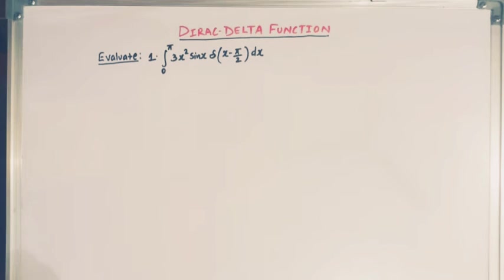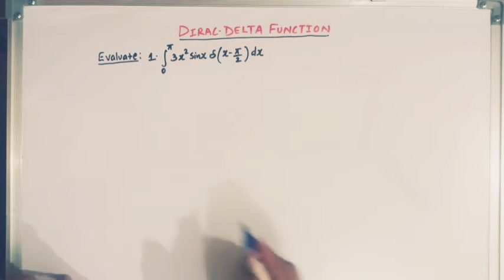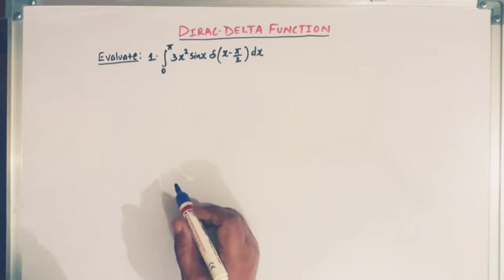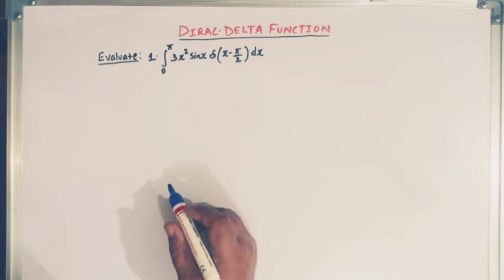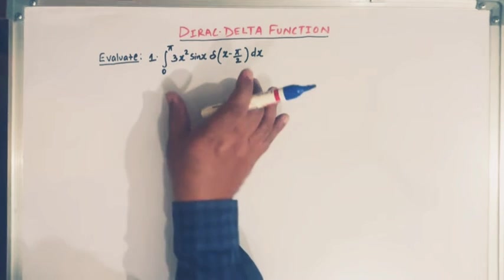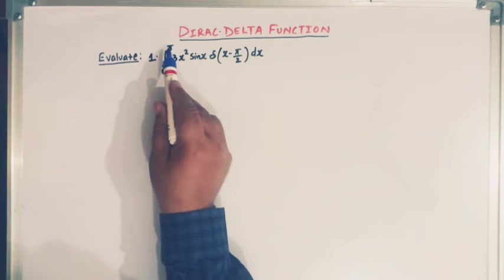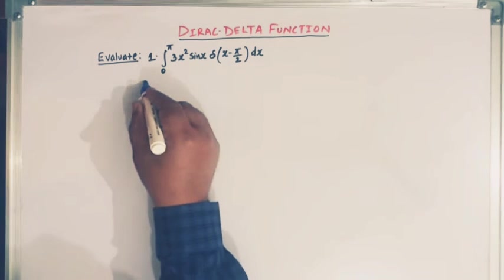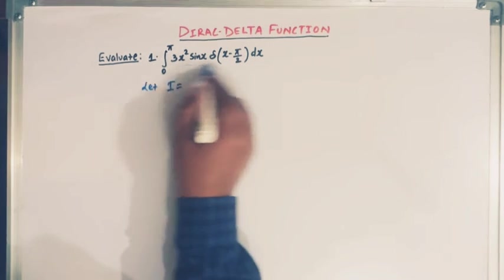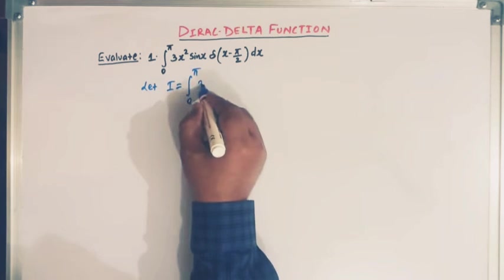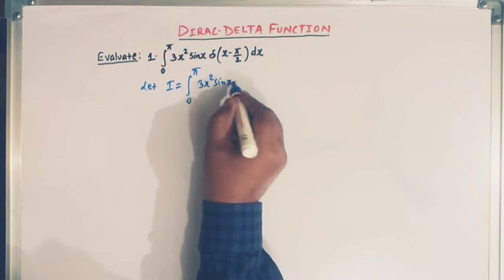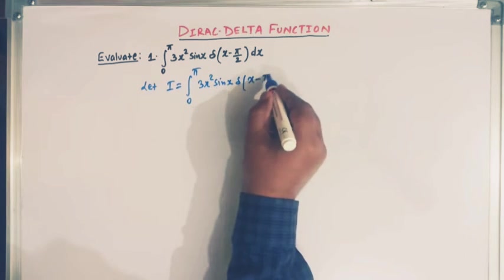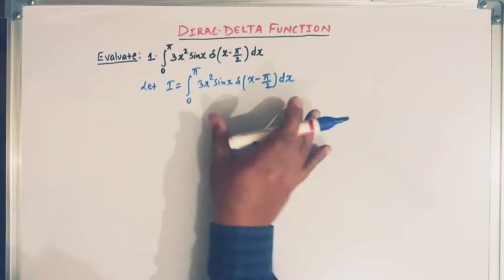Hello viewers, in today's class we are going to take up some integrals involving the Dirac delta function. We'll solve some problems related to the famous Dirac delta function. Here we have the first problem, where we have to integrate this function from 0 to π. Let us denote this integral by I and use the definition of the Dirac delta function to evaluate it.